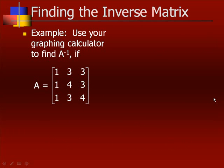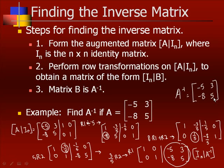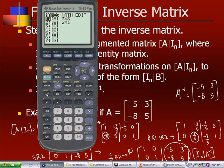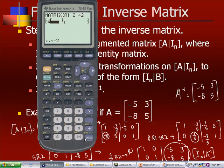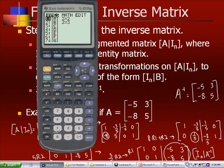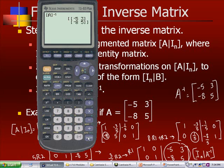Let's use our graphing calculator to find A⁻¹ and see if it's a little bit easier. Go to second matrix, edit, enter the 2 by 2 matrix: -5, 3 across, then -8, 5 for the second row. Then second quit. Pull the matrix back up, select matrix A, and use the inverse button — the fourth one down. We get A⁻¹ = [-5, 3; -8, 5], confirming our earlier answer.